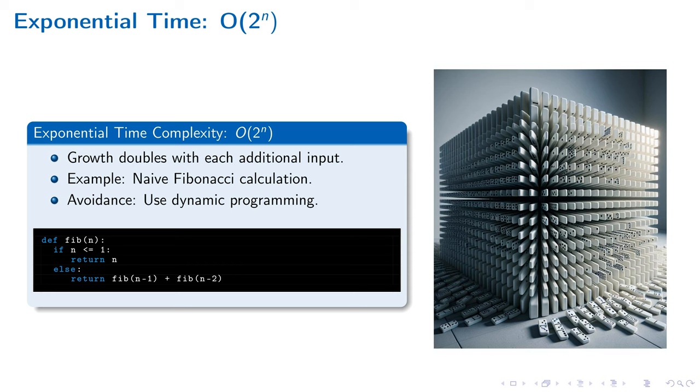Exponential time complexity is a crucial concept, especially illustrated through the O(2^n) notation. This is where, with each additional piece of input, computation time doubles, showcasing a severe impact on scalability.